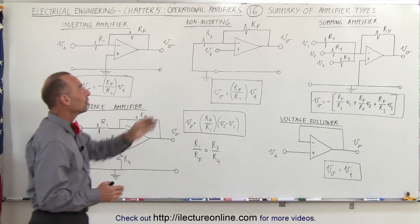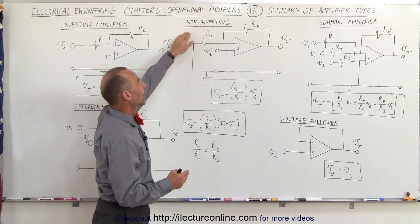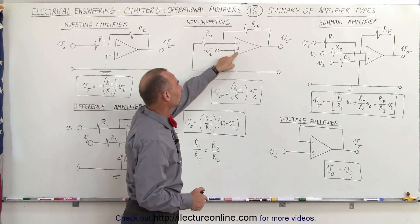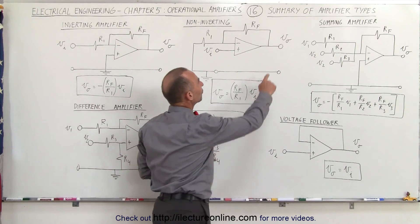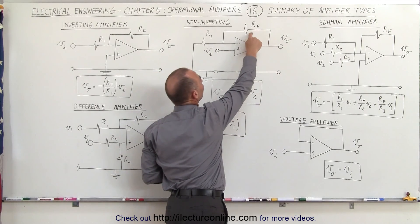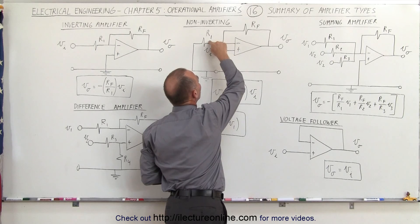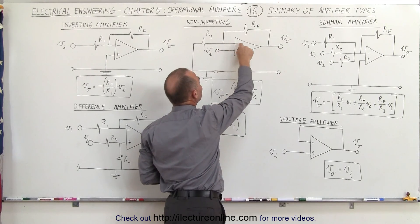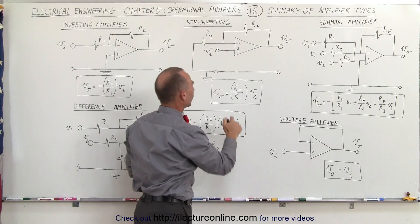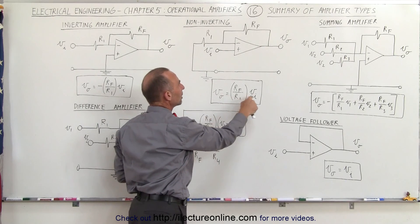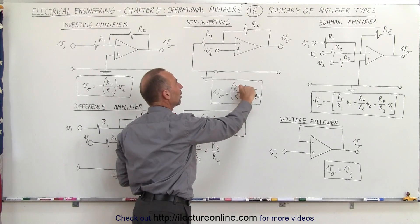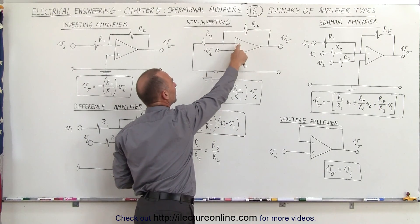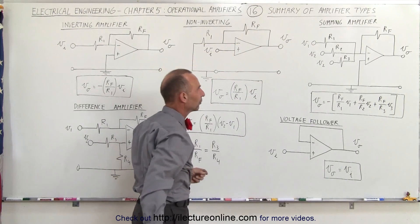We can also have the non-inverting amplifier, where we connect the input voltage to the non-inverting terminal and we have the feedback loop from the output voltage through the feedback resistor to the resistor connected between ground and the inverting terminal. Therefore the output voltage is equal to the input voltage times the ratio of the feedback resistor divided by R1, the resistor between the inverting terminal and ground.